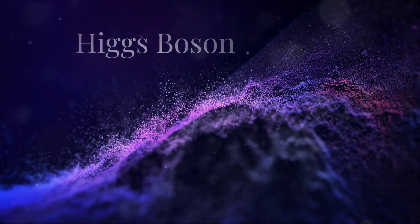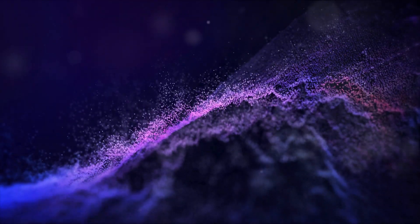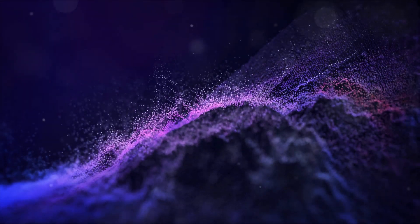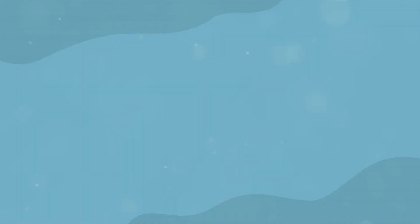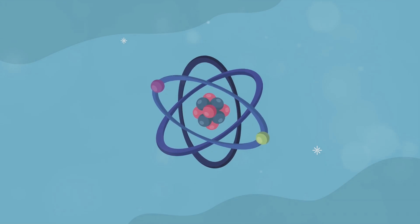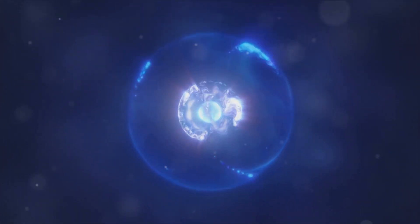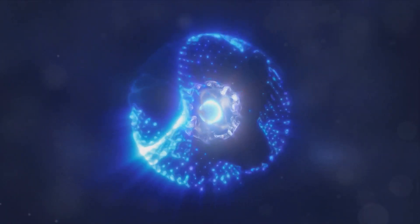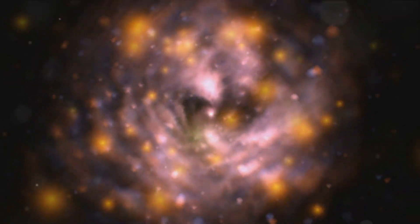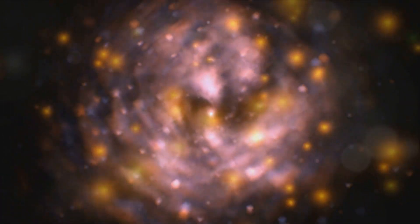Also, there's the Higgs boson, the so-called god particle. Quantum field theory predicted the existence of this elusive particle decades before it was discovered. It's the particle that gives other particles their mass, according to the theory. In 2012, after years of searching, physicists at the Large Hadron Collider finally detected it, a triumph for quantum field theory. The theory has made countless other predictions that have been confirmed by experiments. It's predicted the existence of particles like quarks, gluons and neutrinos long before they were detected. It's explained phenomena like superconductivity and the behavior of black holes. It's even shed light on the birth of the universe itself.